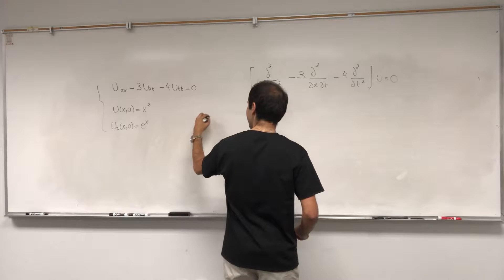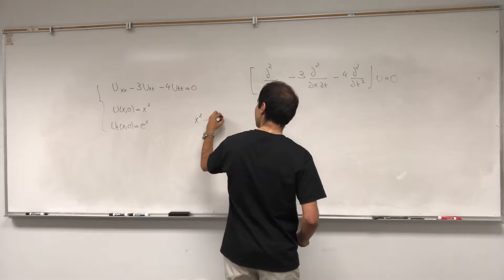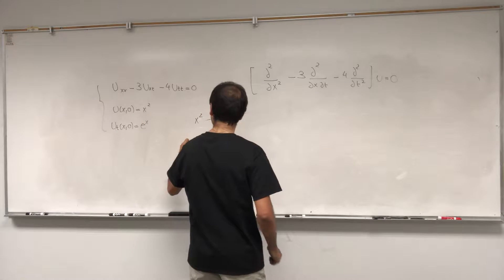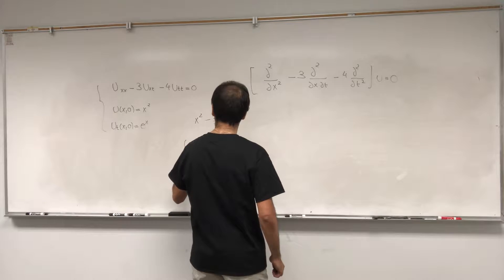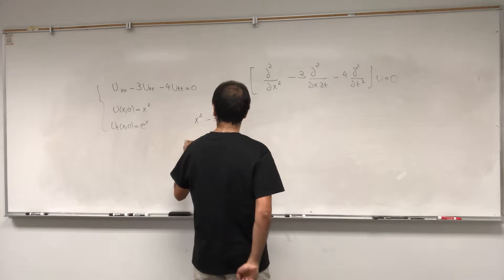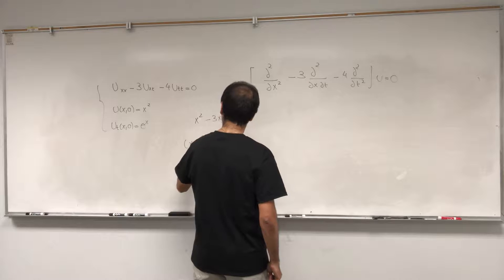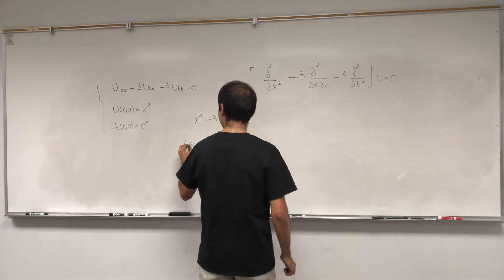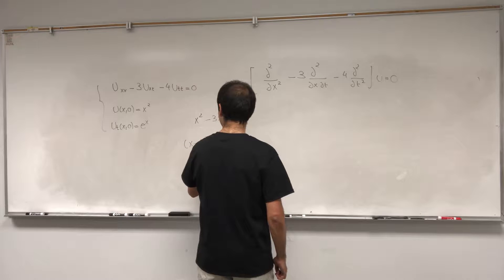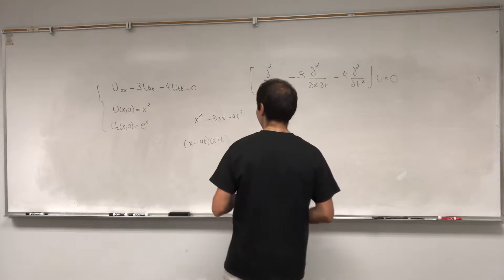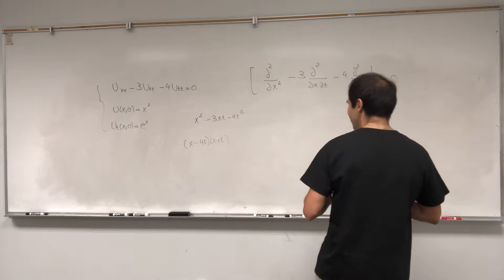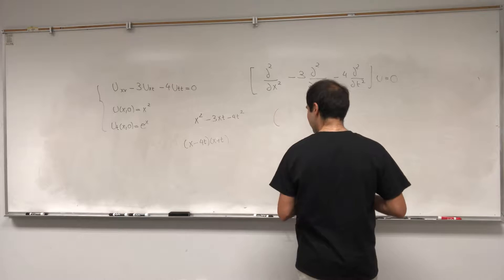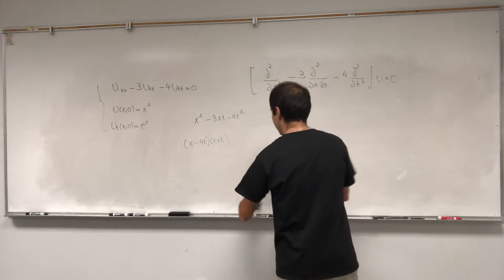So x² minus 3xt minus 4t² — I think you can factor this as (x minus 4t)(x plus t), giving x² plus xt minus 4xt minus 4t². So that works. In other words, this expression factors as a product of two things.